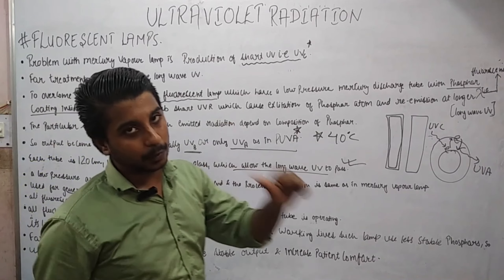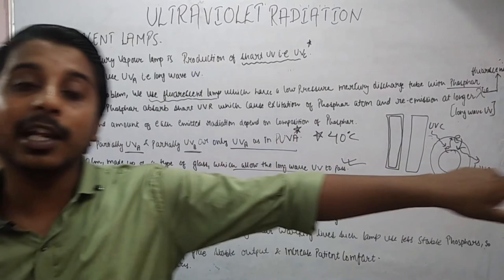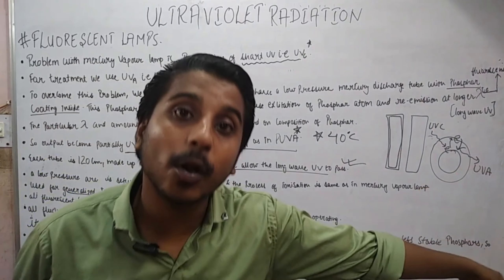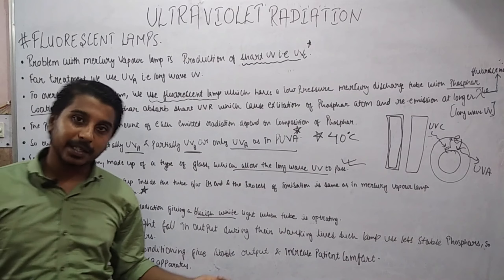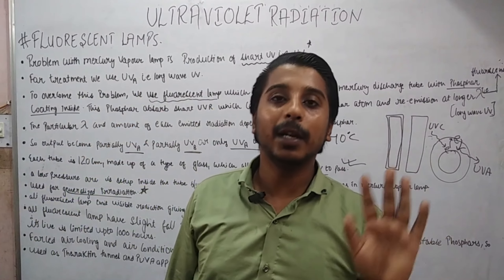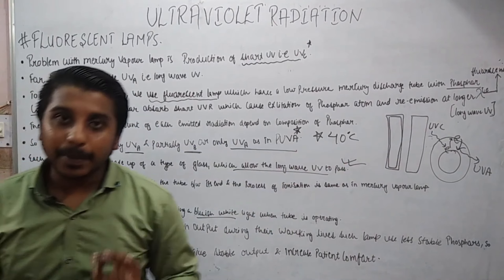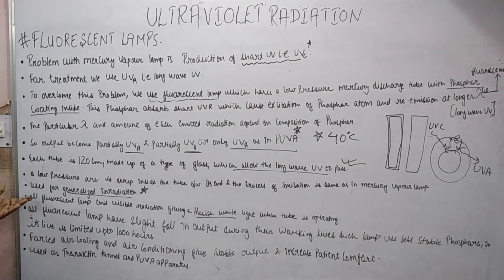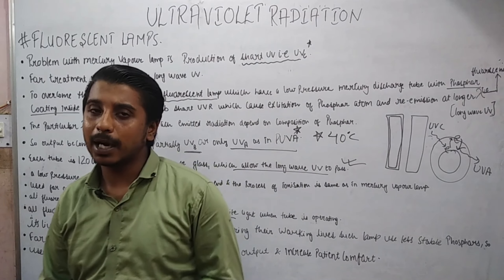So this is all about the fluorescent lamp. You need to understand it is made up of a 120 cm tube, phosphor coating is present inside. The use of this phosphor is to absorb short UV and re-emit long UV, which gives a bluish white color due to the fluorescent property of phosphor — not due to UV itself, because UV is invisible. Output also depends upon temperature, and the optimal temperature is 40 degrees Celsius. It is used for generalized irradiation via the theractin panel. If made with less stable phosphor, it gives output only up to 1000 hours.